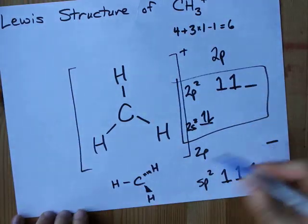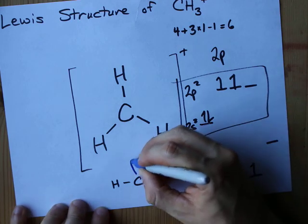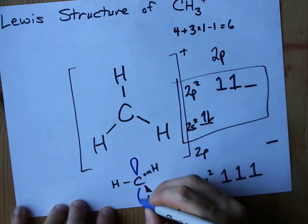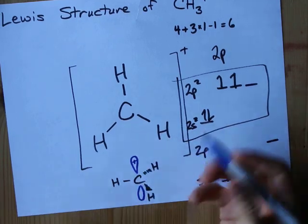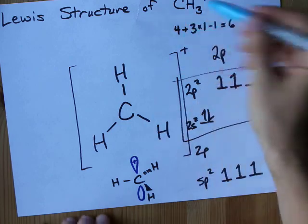And then the 2p unoccupied orbital sticks out above and below like this. You might want to draw a plus charge in there to show that it's got a positive charge.